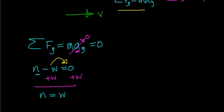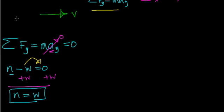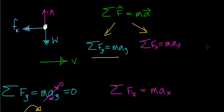There are instances where the normal force does not equal the weight force, but in this case we're assuming we're driving along a completely horizontal, flat surface. Now the second relationship we need is the sum of forces in the x-direction, which equals the mass of the object times the acceleration in the x-direction. Looking at the free body diagram, there is only one force acting in the x-direction.